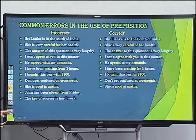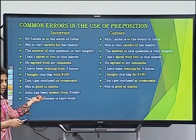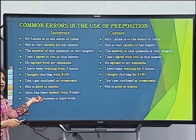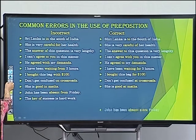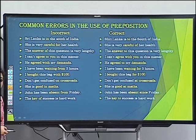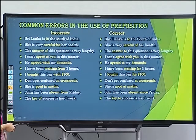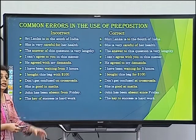Error: 'John has been absent from Friday.' Since 'has been' is used and Friday is a fixed day (a point of time), we use 'since.' Correct: 'John has been absent since Friday.' Also, the key of success — it should be 'key to success,' 'key to happiness.' Use 'to' with 'key.'